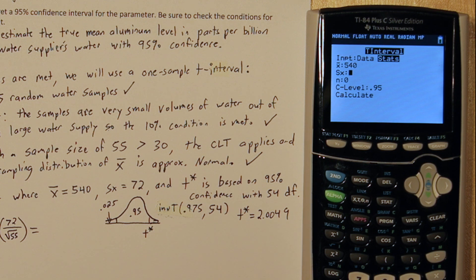For s-sub-x, put 72, the sample standard deviation. And for sample size, put 55. You can leave the confidence level at 95. When you press calculate, it will calculate your confidence interval. So, 520.54 to 559.46.